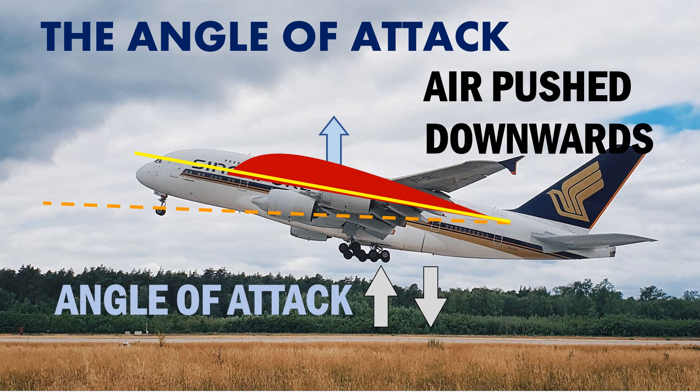A decrease in the angle of attack means that less air is pushed downward and hence less lift is created. So, we can say that as long as the air gets pushed downward at the trailing edge, lift is created on the wing.